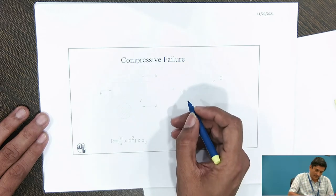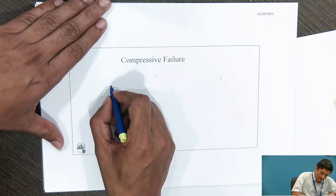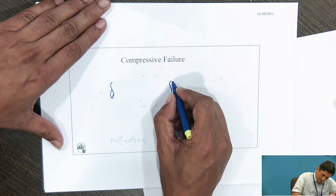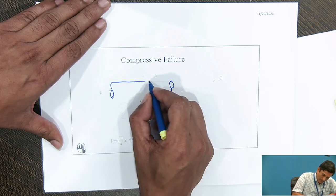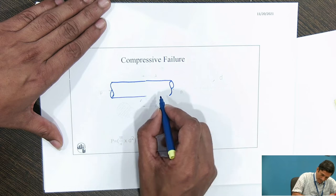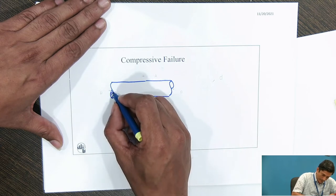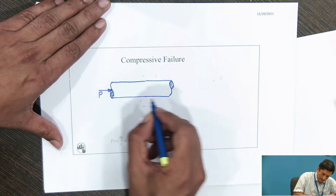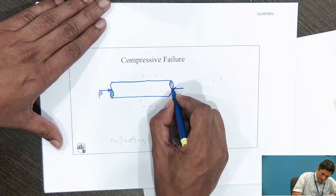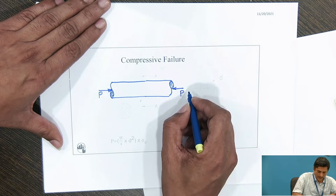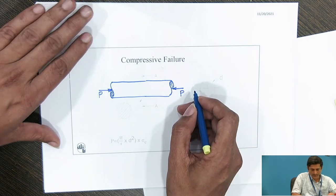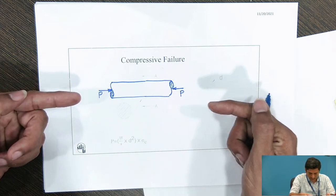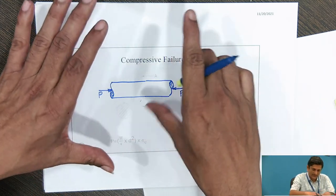It means that a component is loaded with a push force. In comparison with the tensile failure, the only change is instead of outweighing force, it is incoming or pushing. It is going to reduce the length and increase the lateral dimension.